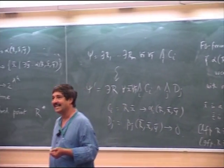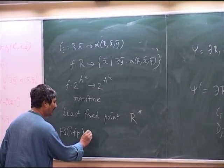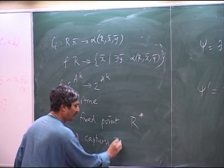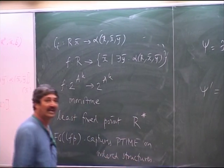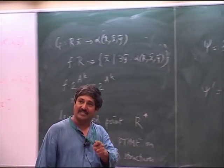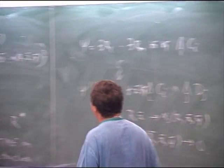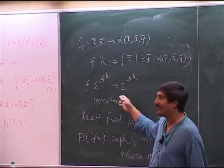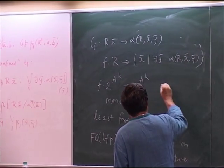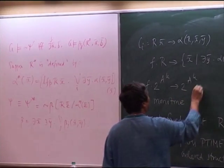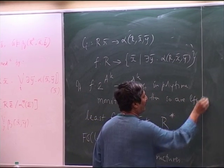What about the other direction? The claim is that FO+LFP — the fixed point extension of FO — captures P-time on ordered structures. If F is computable in polynomial time, then so are LFP of F and GFP of F.